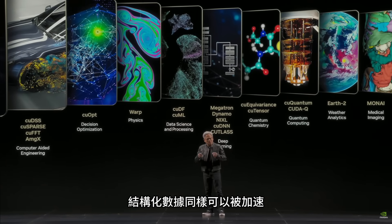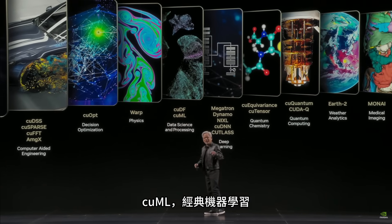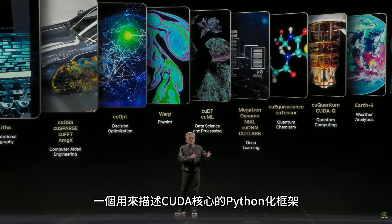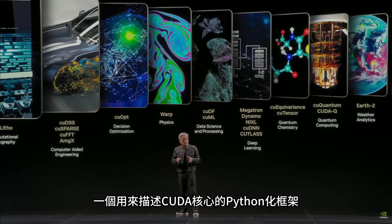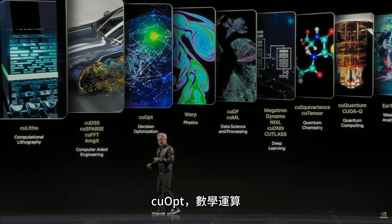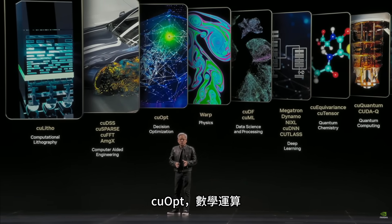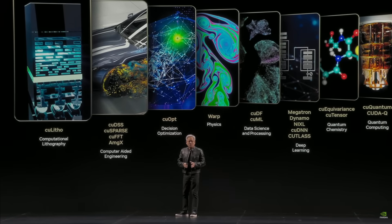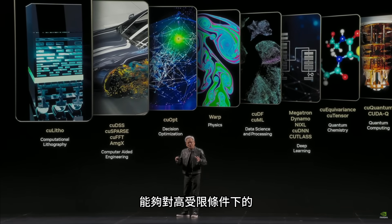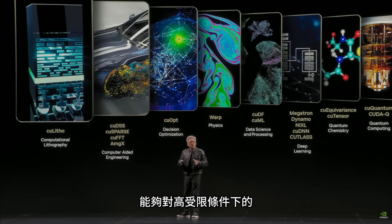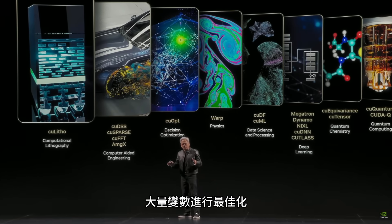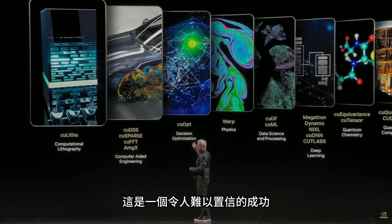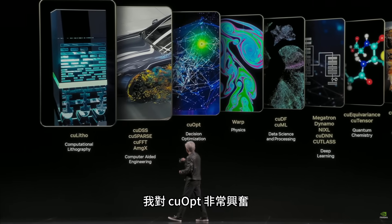Structured data can be accelerated as well. cuML for classical machine learning. Warp, a Pythonic framework for describing CUDA kernels. cuOpt for mathematical operations and optimizations — things like the traveling salesperson problem, the ability to optimize highly constrained, large number of variables type of problems like supply chain optimization. This is an incredible success. I'm very excited about cuOpt.